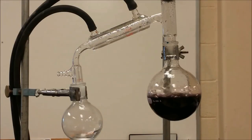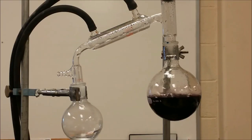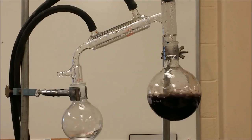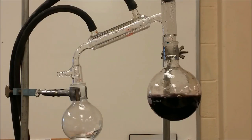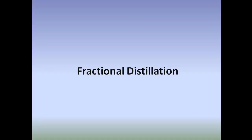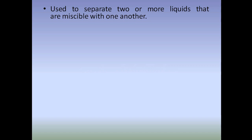See — the mixture is boiling in the round-bottomed flask, vapor escapes and enters the condenser, which is cooled by circulating cold water, and the vapor condenses inside the condenser. The condensed pure liquid is collected in another flask.